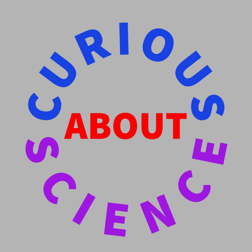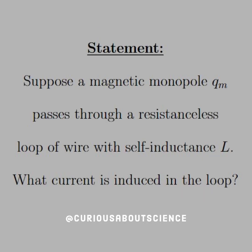Welcome back. As promised, we had another quick hitter with this magnetic monopole or magnetic charge QM. The statement reads: suppose that we have a magnetic monopole QM that passes through a resistanceless loop of wire with self-inductance L. What is the current induced in this loop?